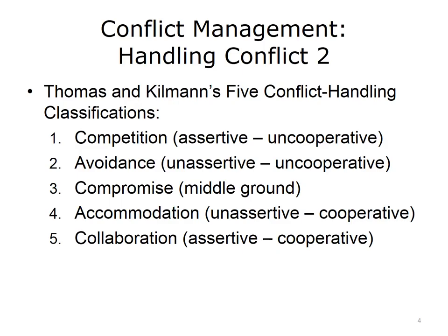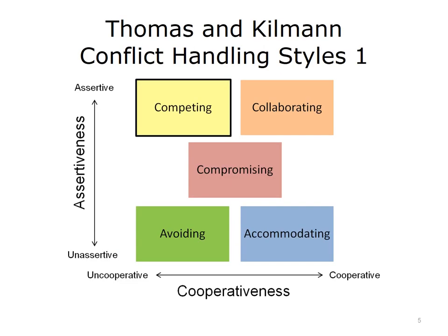On the next few slides, we will take a look at what each of these conflict handling classifications means. Assertive indicates that an individual is seeking to attain his or her own concerns. Cooperativeness indicates that an individual is looking to satisfy the concerns of others. The figure on this slide represents Thomas and Kilman's conflict handling styles, illustrating the five classifications with assertiveness on the vertical axis and cooperativeness on the horizontal axis.